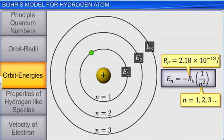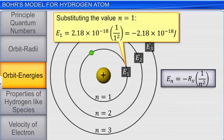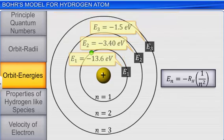Thus, the energy of the ground state, n equals 1 for hydrogen atom is equal to minus 2.18 multiplied by 10 raised to the power minus 18 joules. The energies of excited states can be measured in the same way and represented in the form of an energy level diagram.